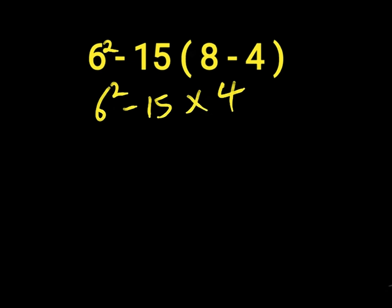6 to the power of 2 equals 6 times 6. 6 times 6 will give us 36. Then 36 minus 15 times 4. 36 minus 15 will give us 21, then we have 21 times 4, which will give us 84.